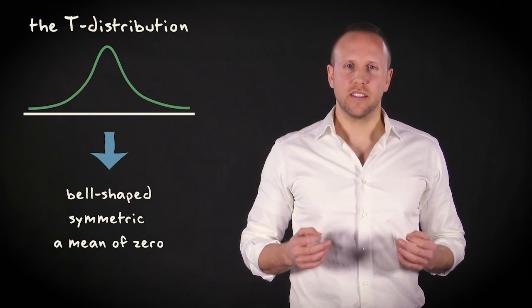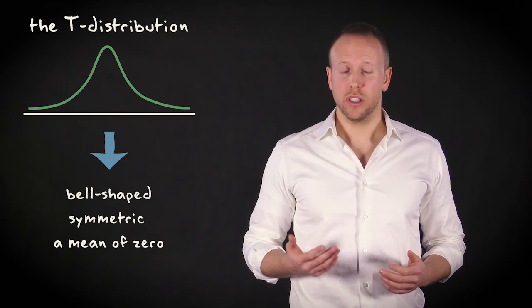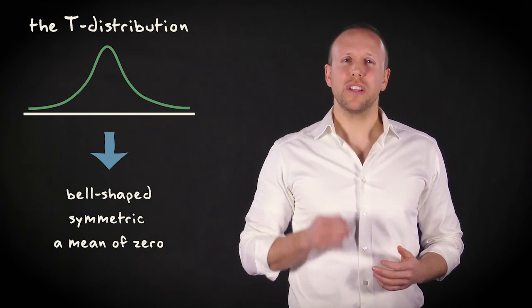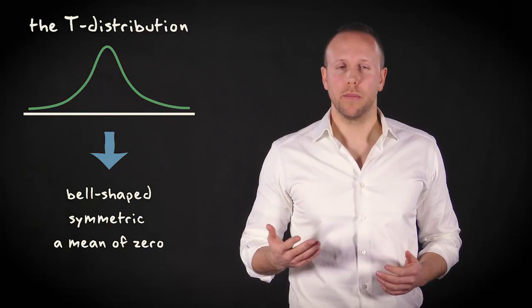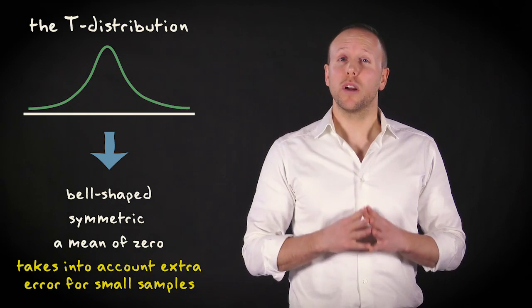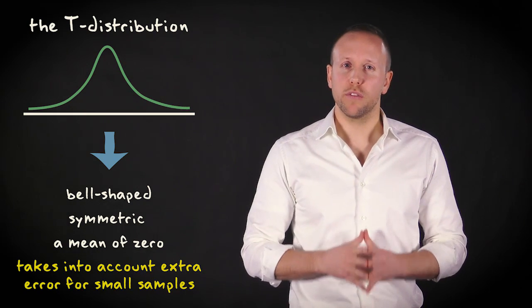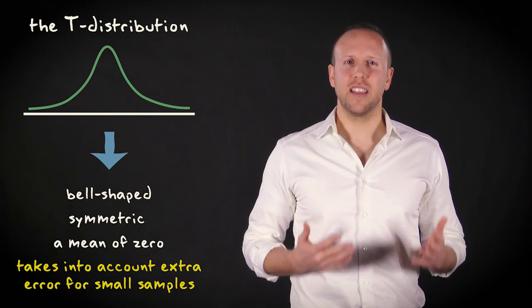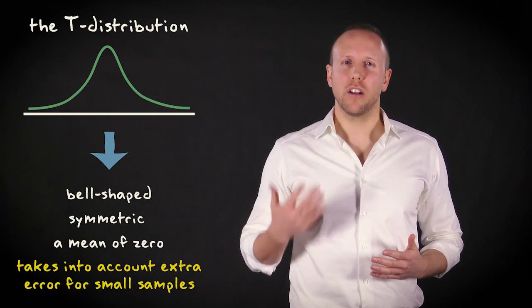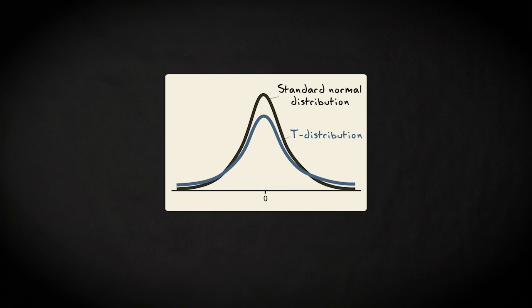Because we now estimate the standard deviation of the sampling distribution, we introduce extra error. That error can be substantial when we have a small sample. The t-distribution takes into account that extra error for small samples. The t-distribution therefore has slightly thicker tails than the normal distribution and has a larger standard deviation. You can see that here — the black distribution is the standard normal distribution, the blue one is the t-distribution.